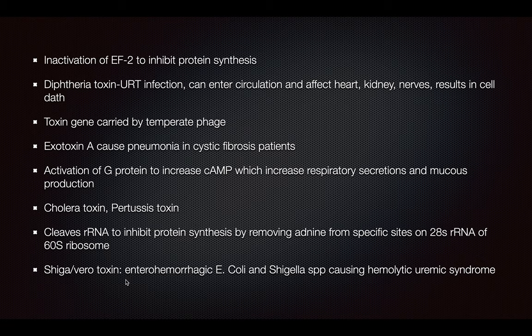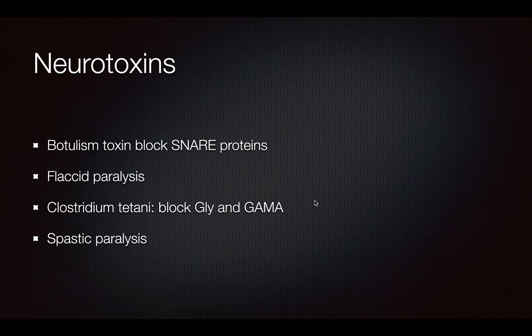The Shiga-like verotoxin is going to cause hemolytic uremic syndrome. Regarding neurotoxins, botulism is going to block the SNARE protein, causing flaccid paralysis because there's no acetylcholine neurotransmitter being released. Then clostridium tetani is going to block the glycine and GABA pathways, and that's going to cause spastic paralysis because there's not going to be any uptake of the acetylcholine.